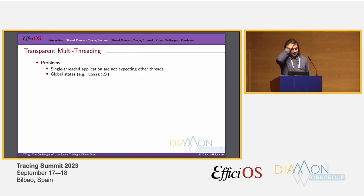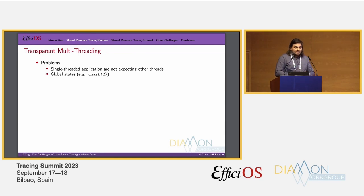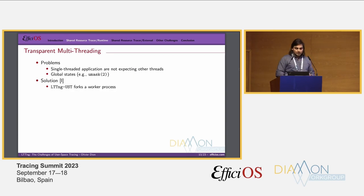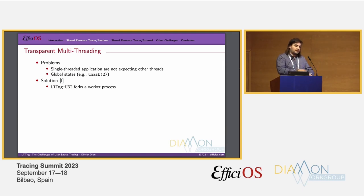Then there is transparent multi-threading. Some applications assume they are single-threaded. For example, global state like umask — you cannot change umask in the tracer because the application is not expecting it to change. Our solution is to fork a worker process: we have a child and send commands to the child, and the child performs the umask change for us.